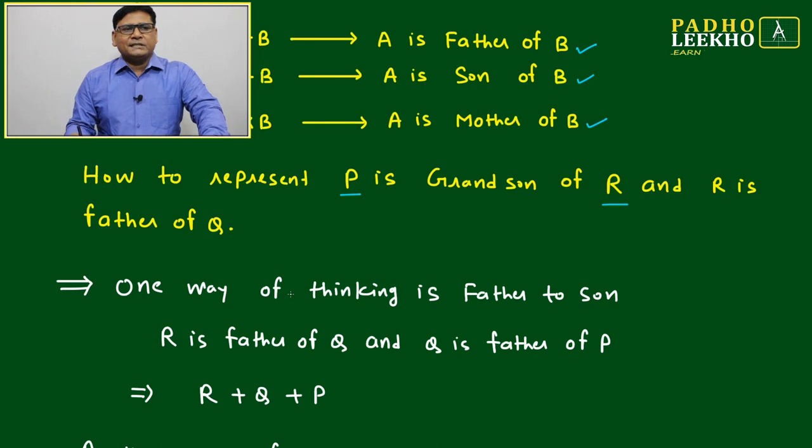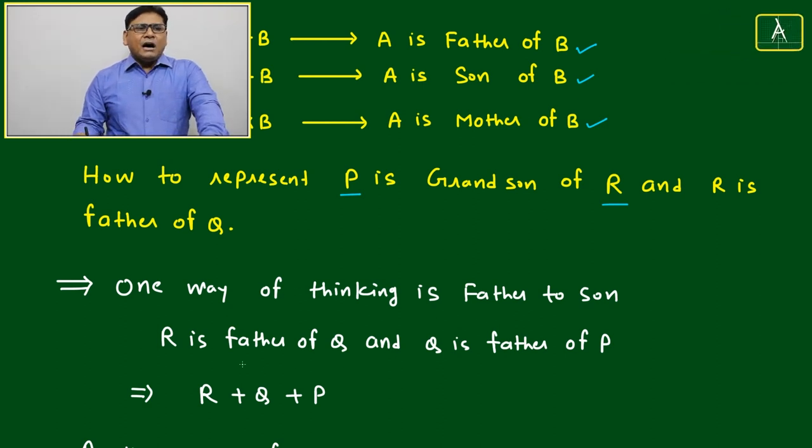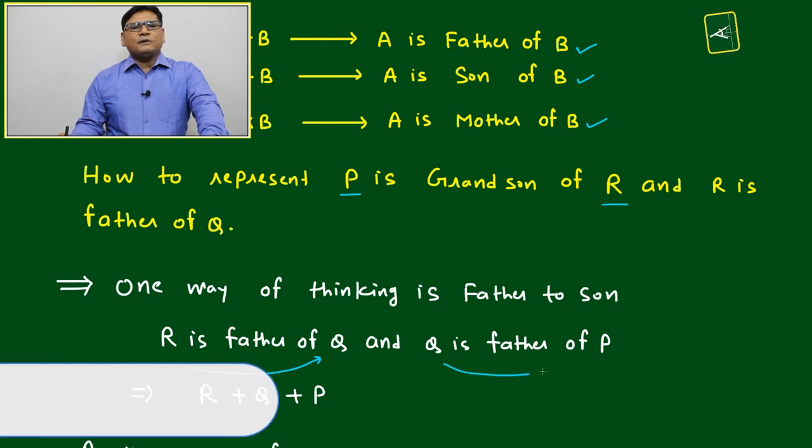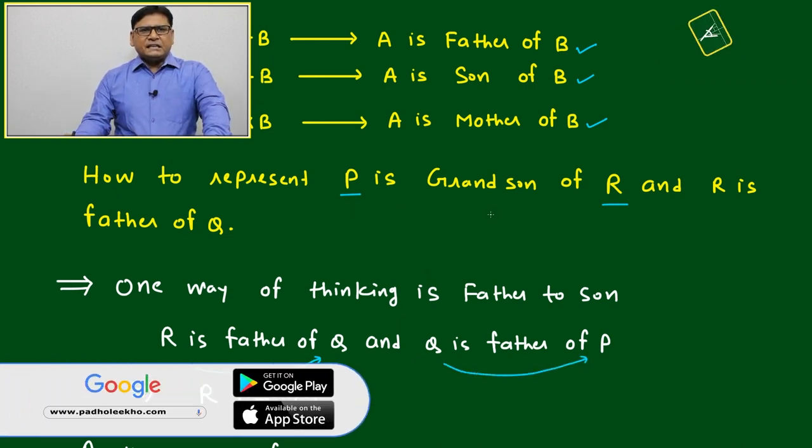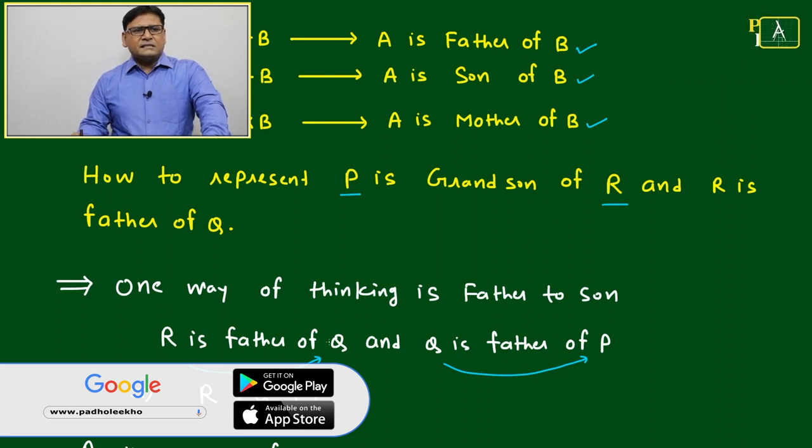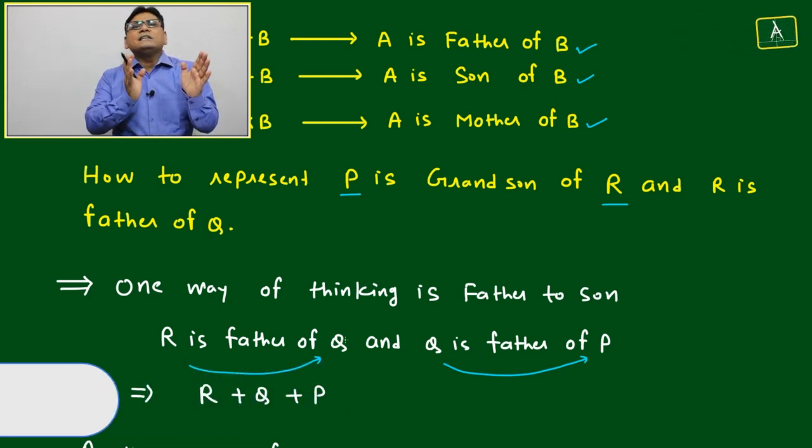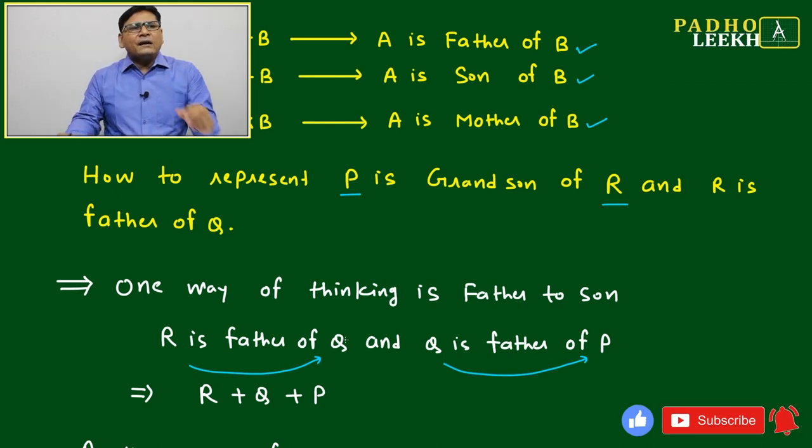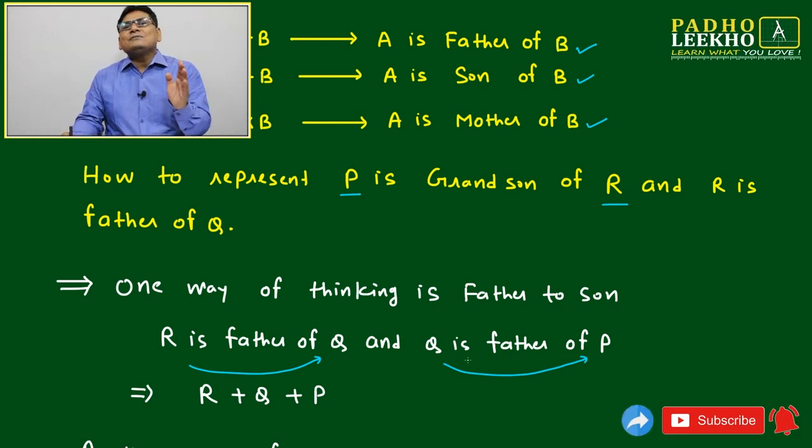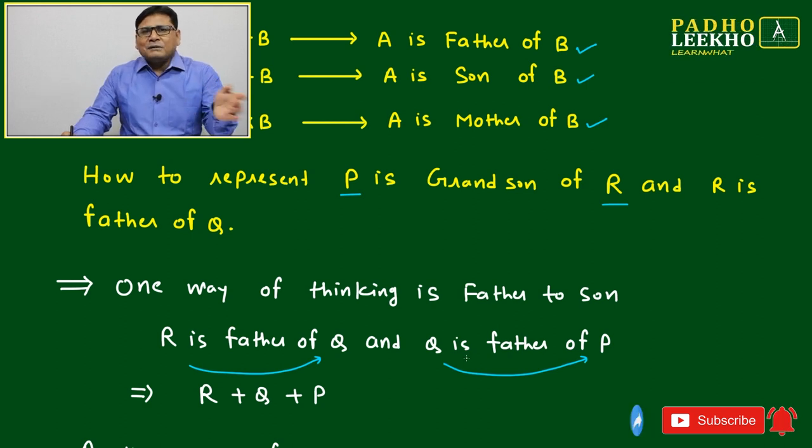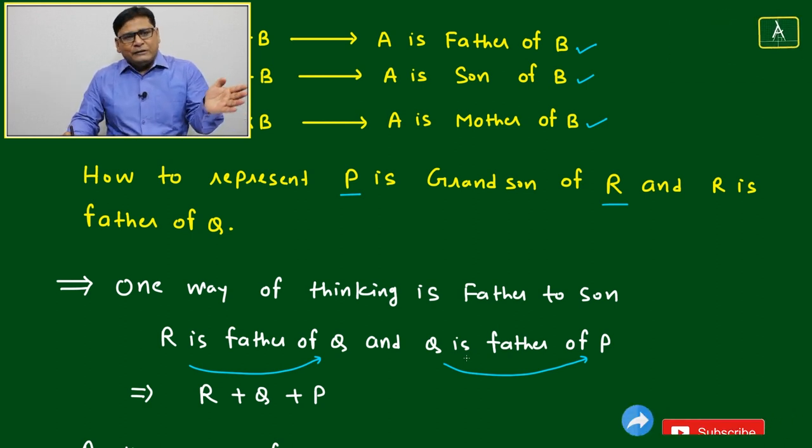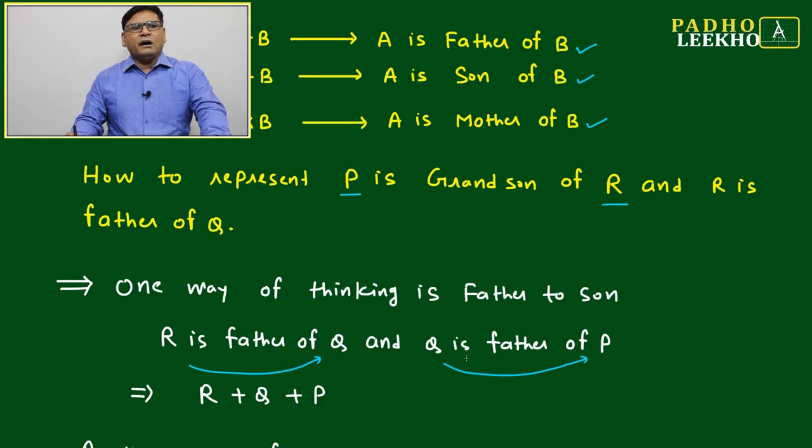Using father to son: R is father of Q and Q is father of P. P is grandson of R means between P and R one generation is there. Who will be there? R is father of Q means Q is in between, so Q must be father of P and R must be father of Q. Then we can say P is grandson of R.